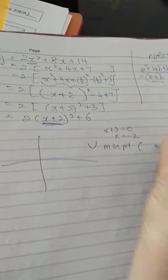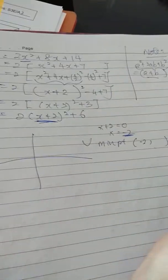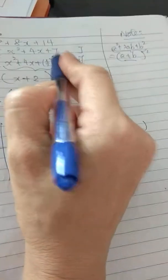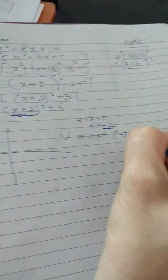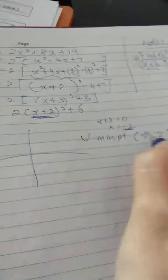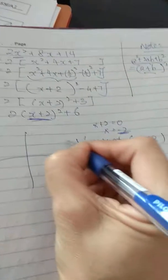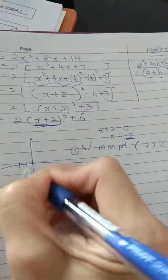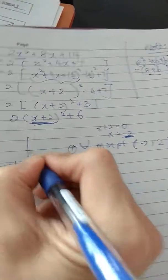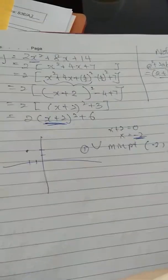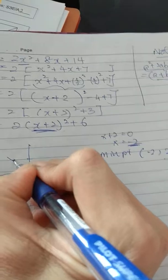The minimum point will be minus 2, comma 3. You're going to mark this point now. The first point you have to mark is always the maximum or minimum point. So minus 2 and 3 mark here. I know this is this kind of shape graph, but this is not good enough.